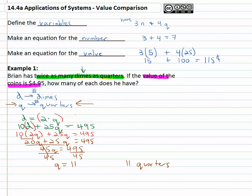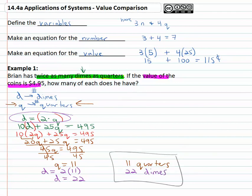We still need to know the number of dimes. Fortunately we have the equation D equals two Q. So D equals two times eleven, which means D equals twenty-two — we have twenty-two dimes. To summarize: eleven quarters and twenty-two dimes, which is twice as many dimes as quarters, and their total value is four ninety-five.